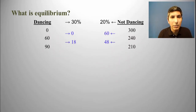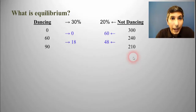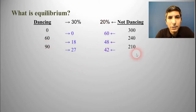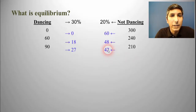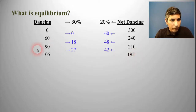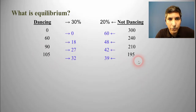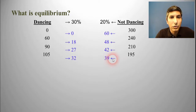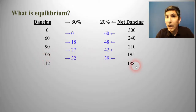After the next song, 30% of 90 is 27 sit down, and 20% of 210 is 42 get up — net gain of 15, so 105 dancing and 195 not dancing. Then 30% of 105 is about 32 sit down, and 20% of 195 gives 39 get up — net gain of 7, so 112 dancing and 188 not dancing. After that, 30% of 112 is 34 sit down, and 20% of 188 is 38 get up — net gain of 4, so 116 dancing and 184 not dancing.